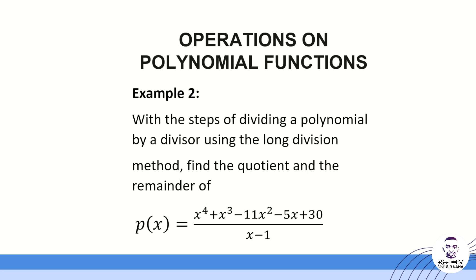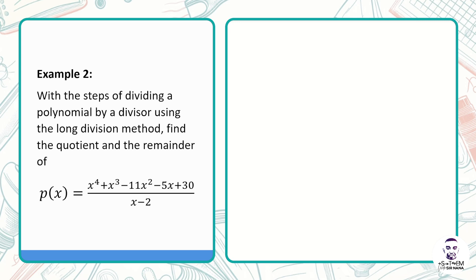Let's go through the process of dividing this polynomial. They want us to write the quotient and the remainder. The dividend is x⁴ + x³ - 11x² - 5x + 30, and this is divided by x - 1.